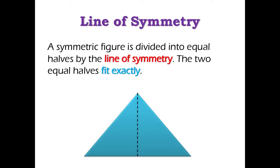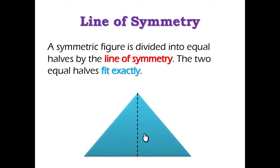Just to quickly recap: what is symmetry and what is a line of symmetry? Basically, a symmetric figure is divided into equal halves by the line of symmetry — this is what we learned about in the first video. What's important is also that the two halves must fit exactly. This line divides the figure into two equal halves, and when you fold them, they fit exactly.